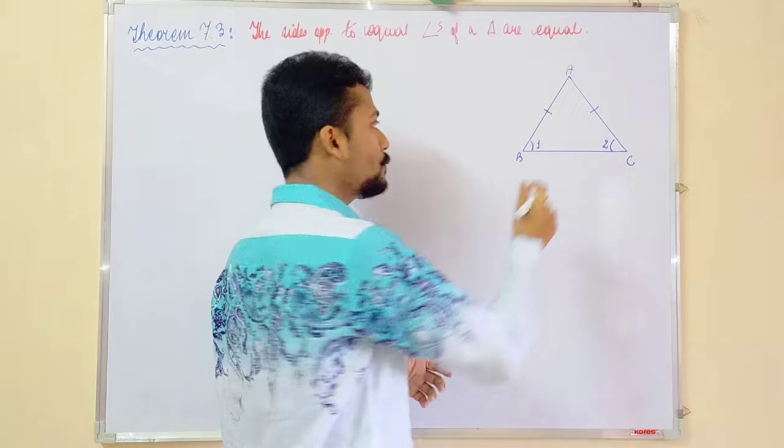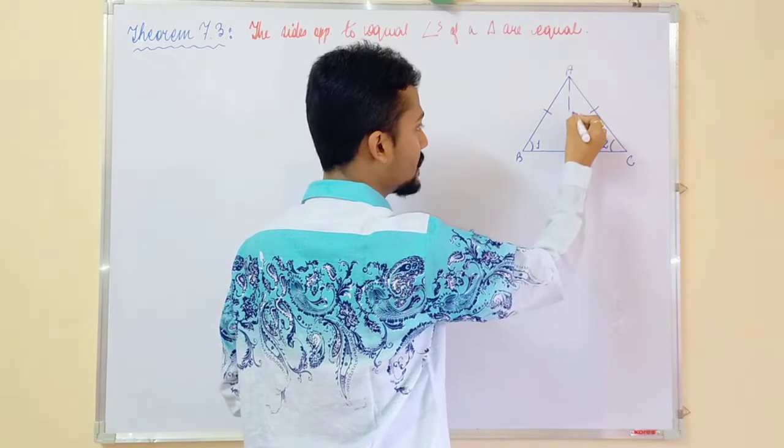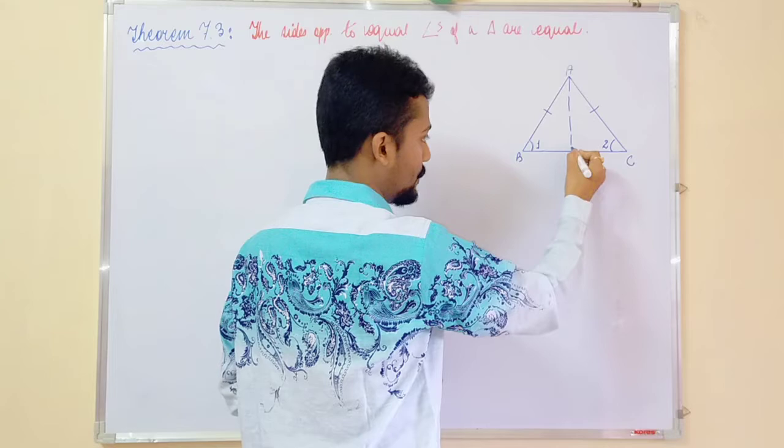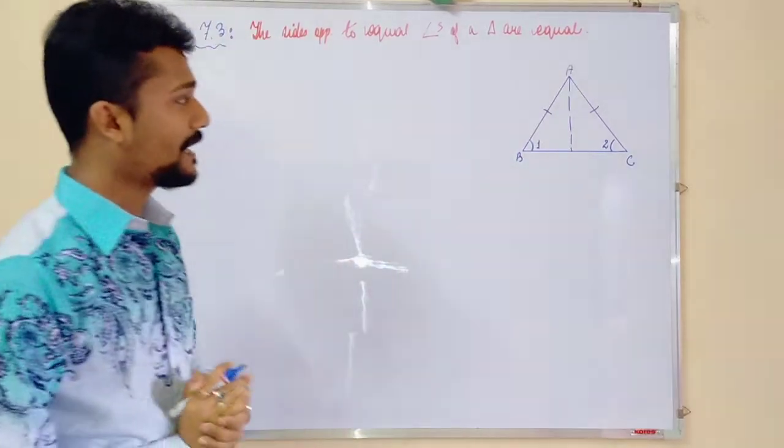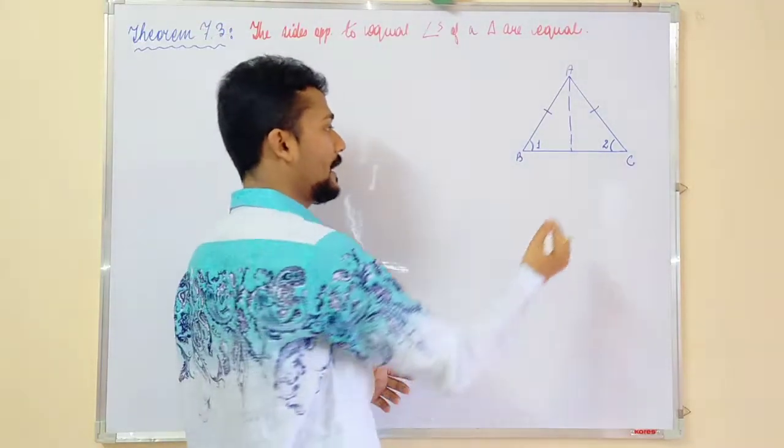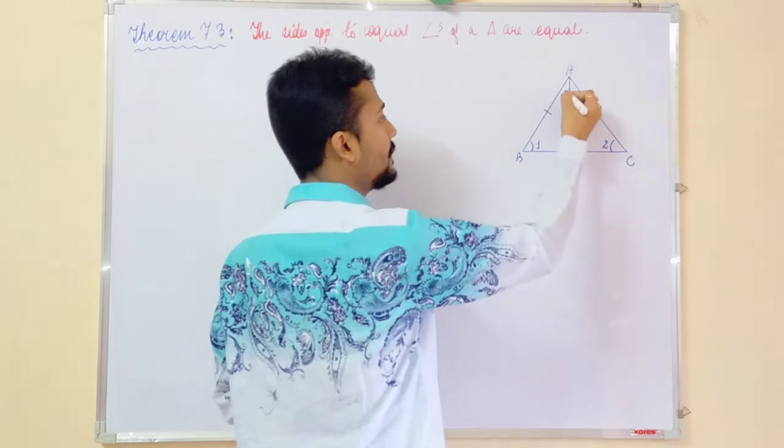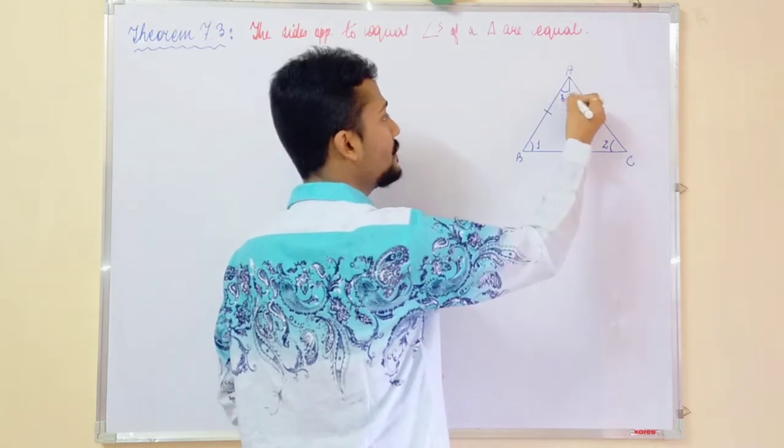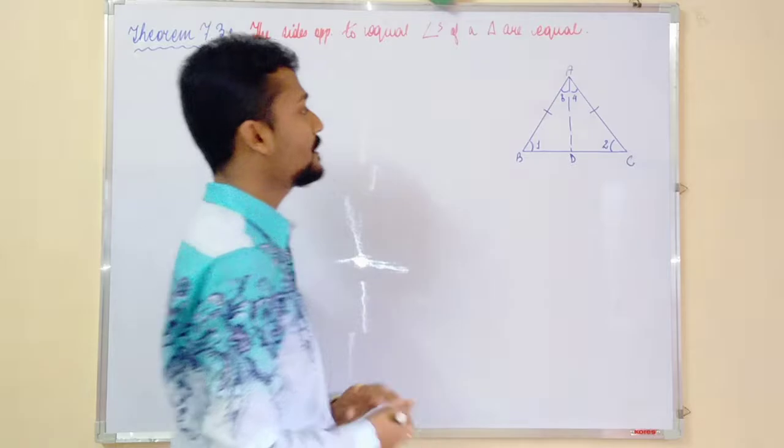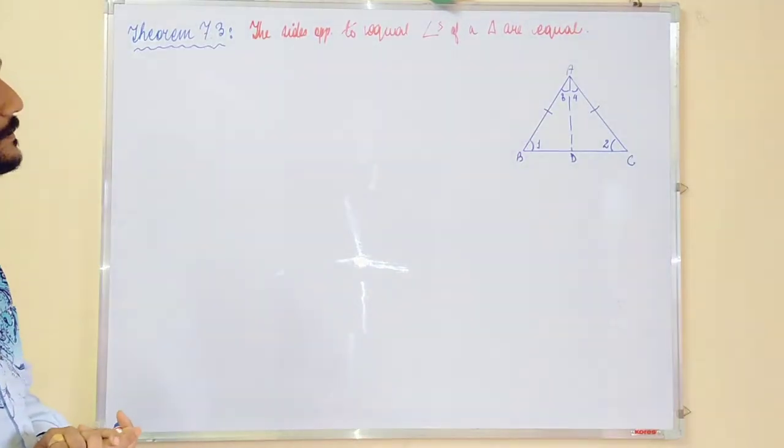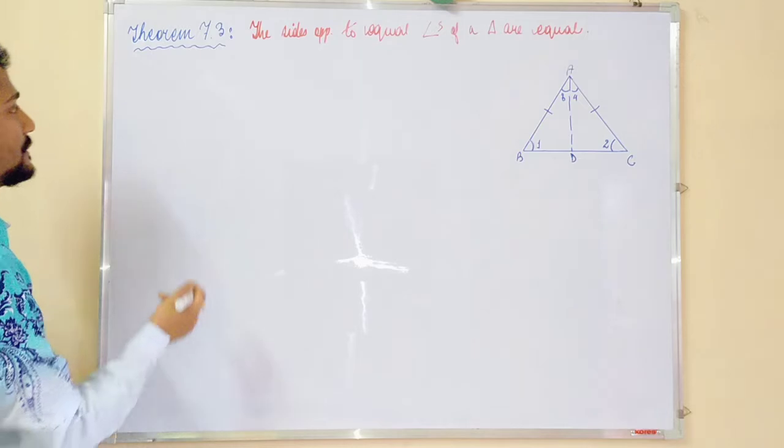So, what we have to do? To prove that, we have to do one construction. We have to draw angle bisector from angle A, AD. That means this particular angle 3 is equal to 4. Is that clear? Okay, so let us see now.